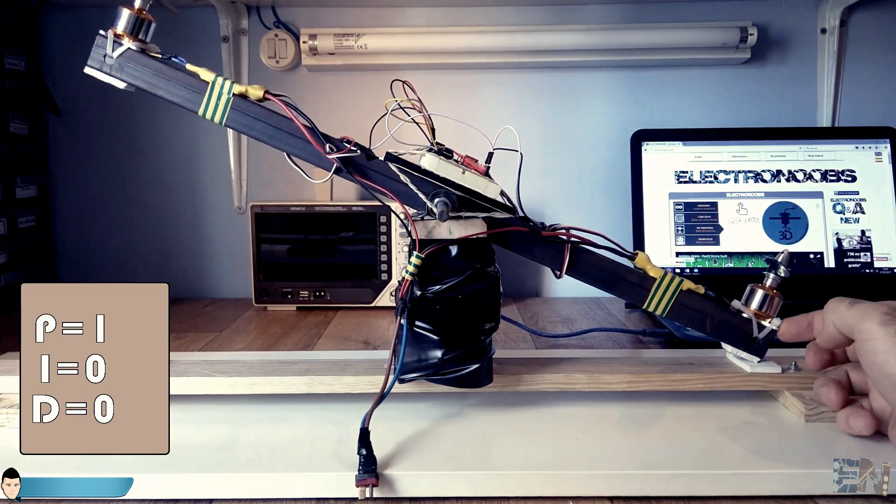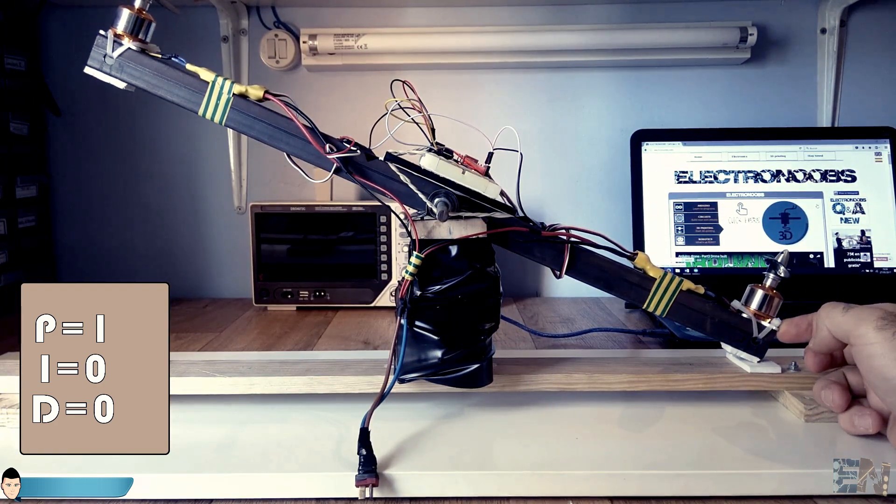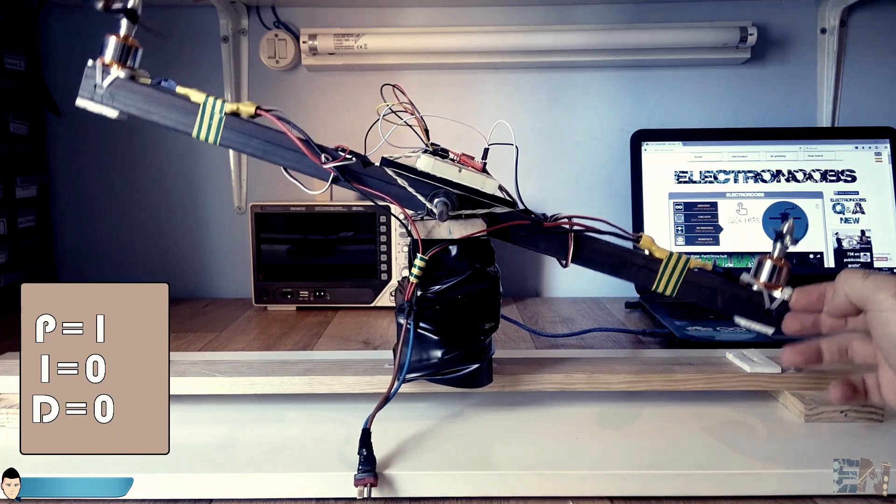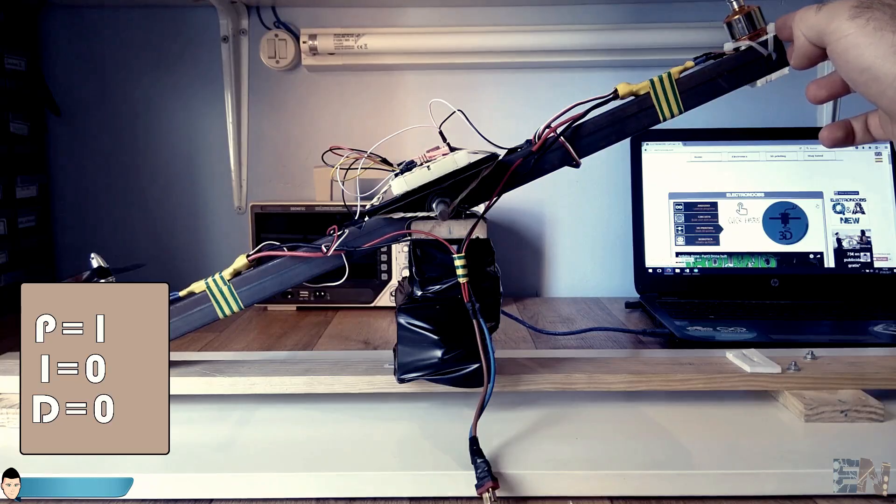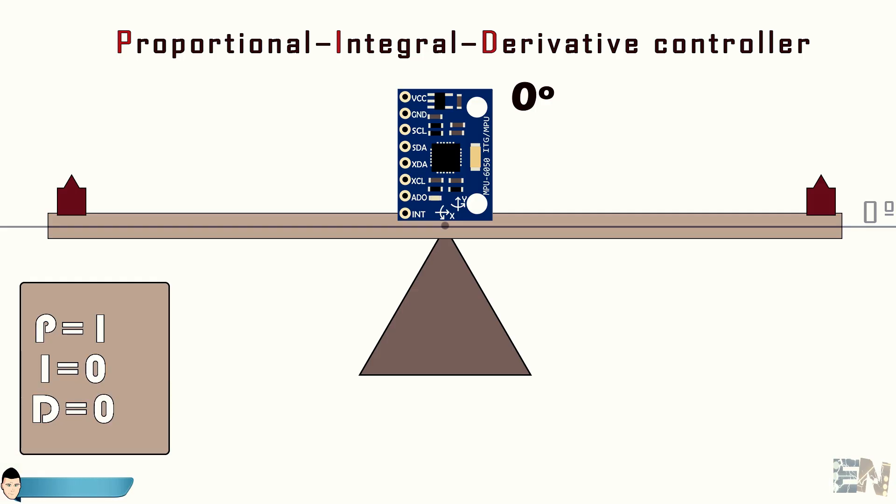Now let's imagine that we make the motor spin at low speed by applying a signal of 1200 microseconds which is around 20% throttle, plus or minus the output of the PID control.